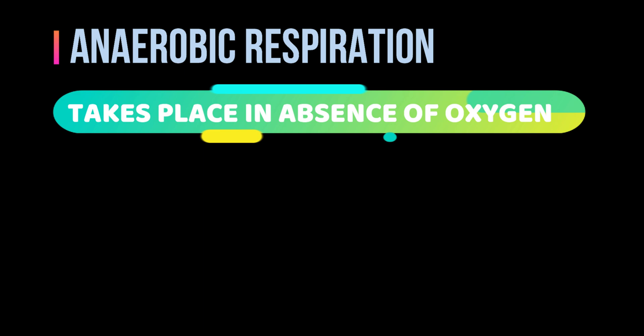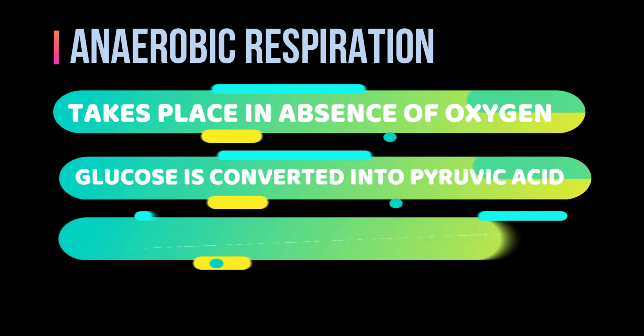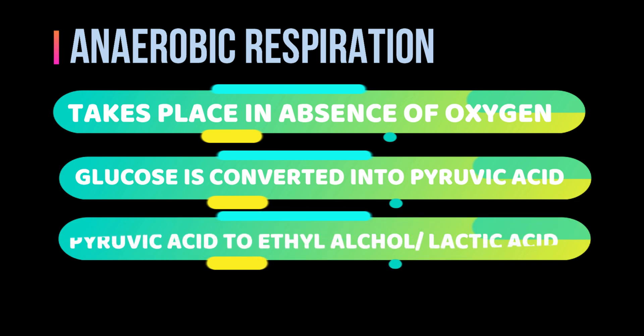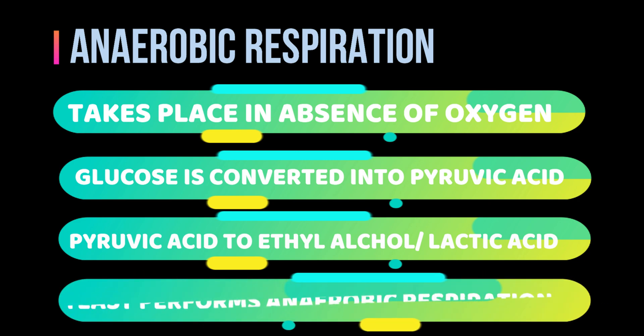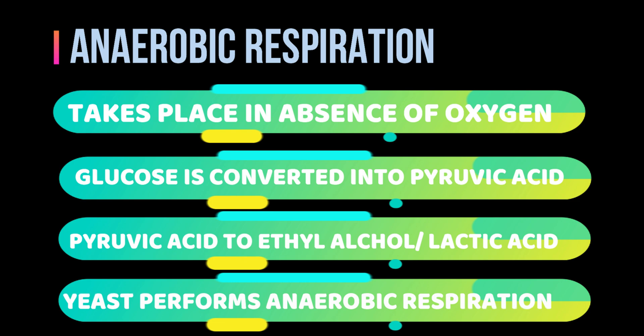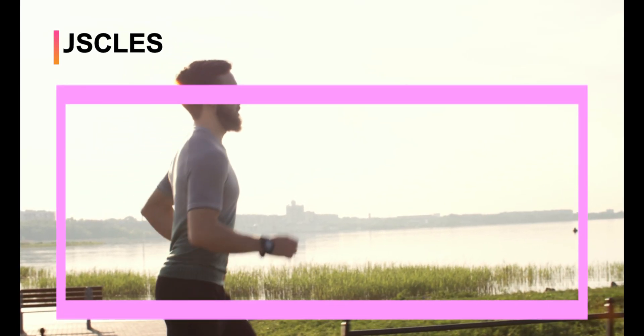The type of respiration which occurs in the absence of oxygen is called anaerobic respiration. In anaerobic respiration, pyruvic acid is converted into ethyl alcohol or lactic acid. For example, in yeast — a small fungus — anaerobic respiration takes place where glucose converts into pyruvic acid, which further converts into ethyl alcohol and releases carbon dioxide and energy.